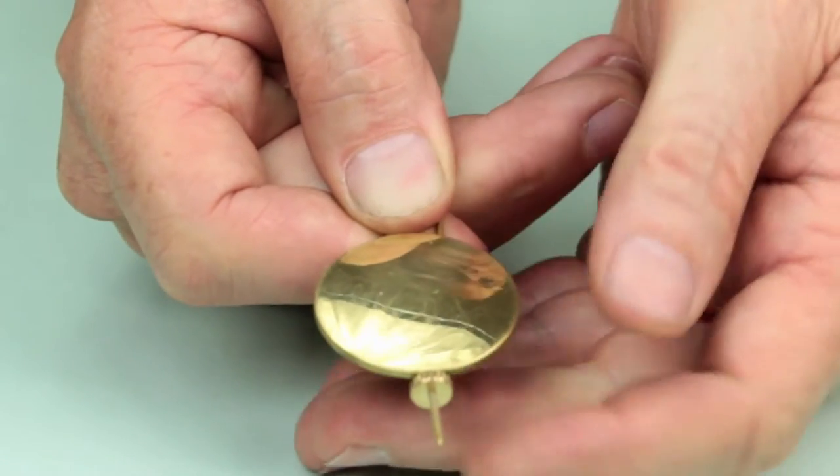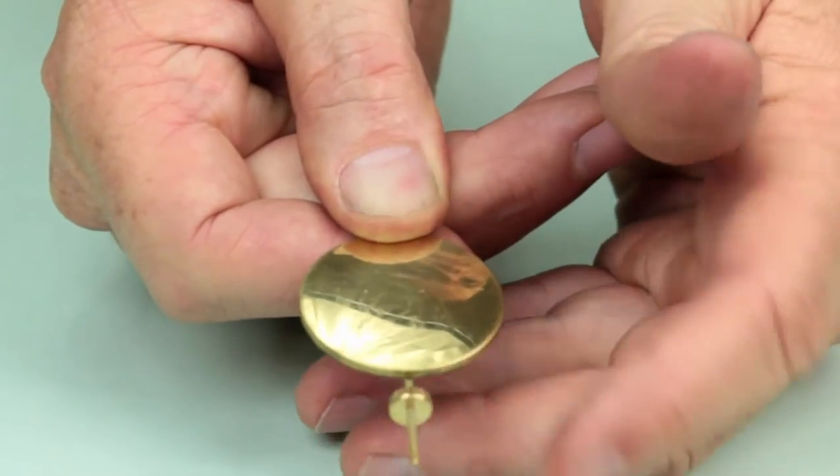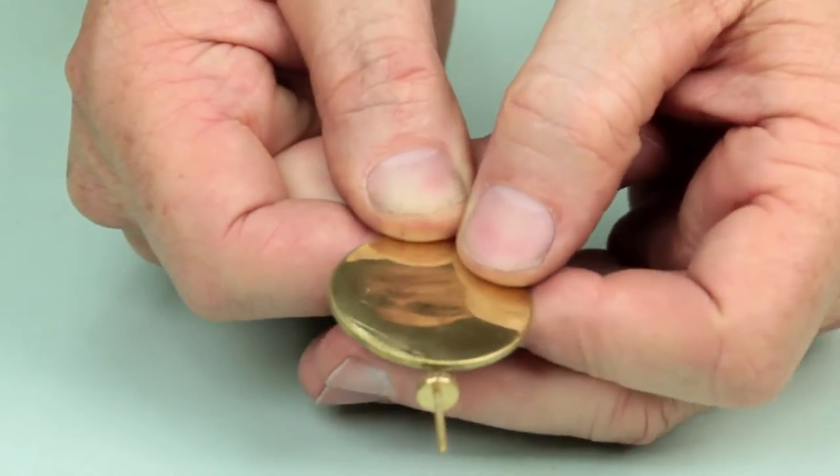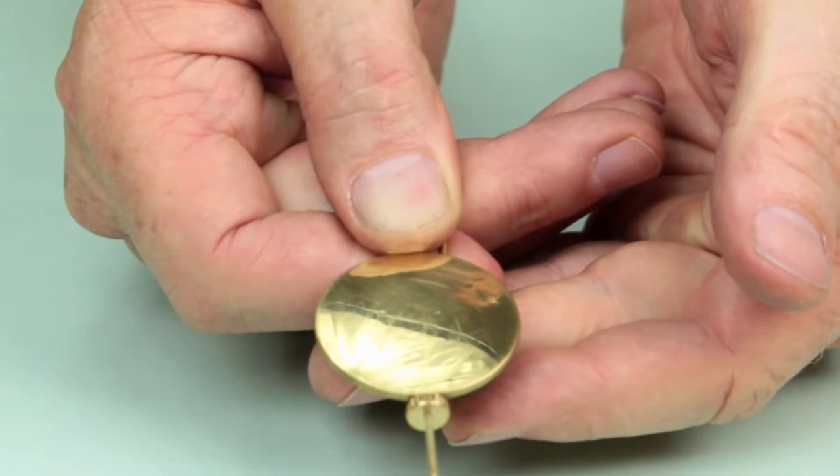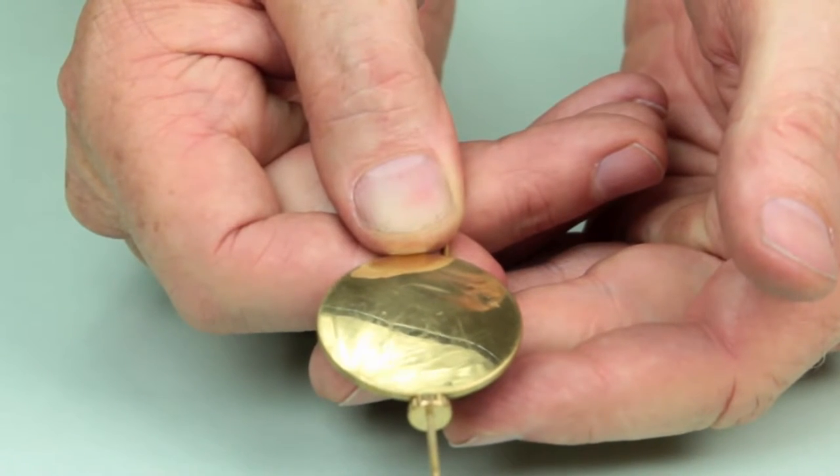On many clocks, the pendulum bob is held in place by a rating nut which allows for a small adjustment of the position of the bob to make fine adjustments of the pendulum's rate.